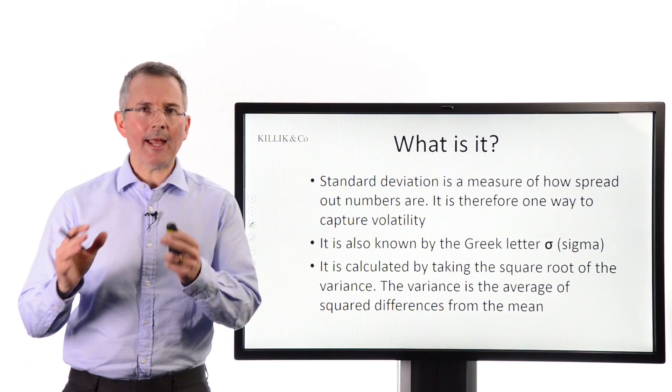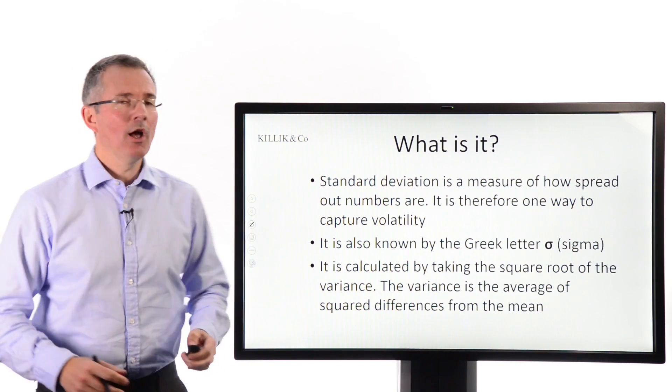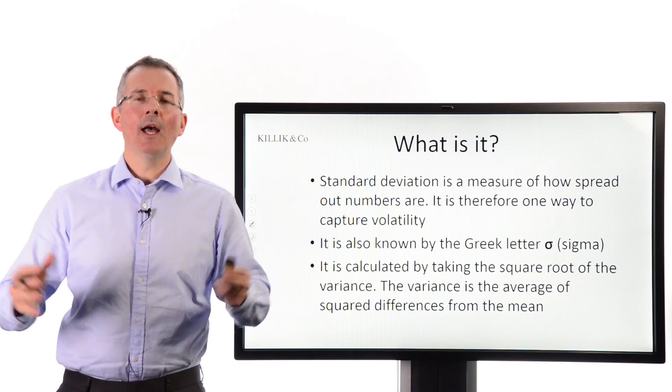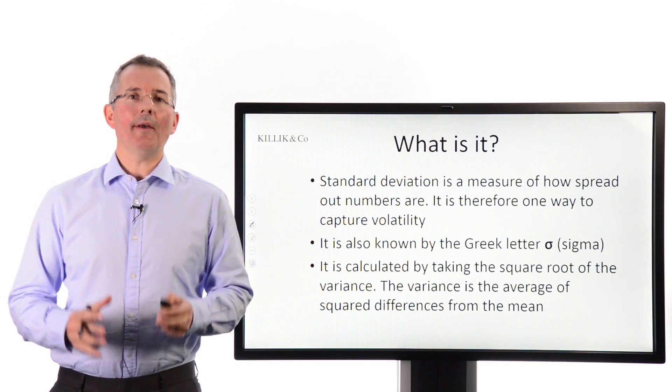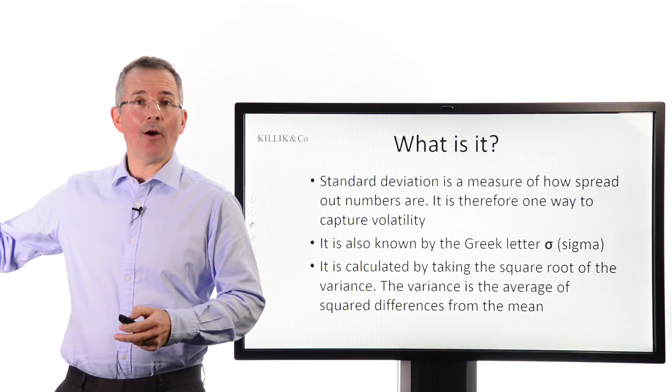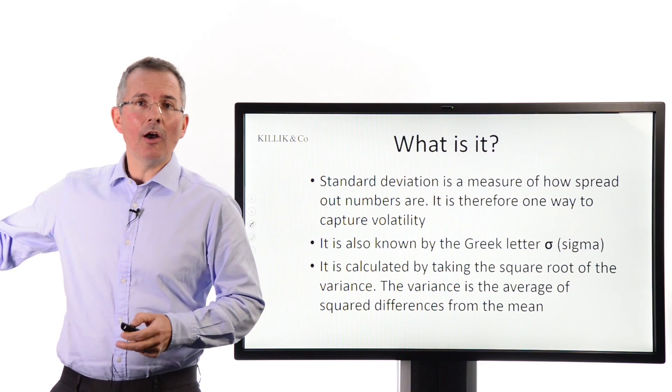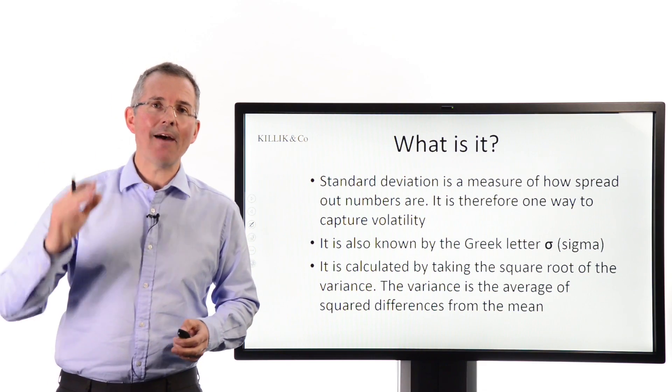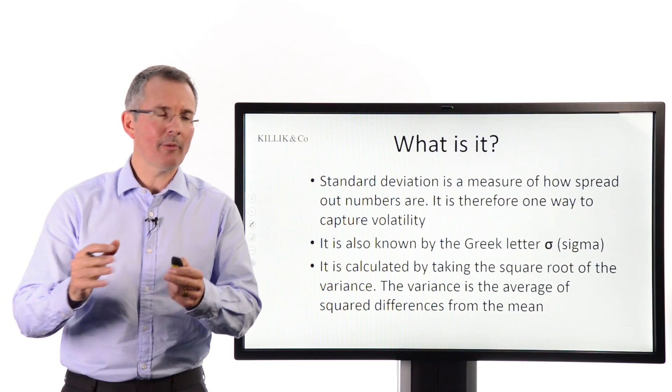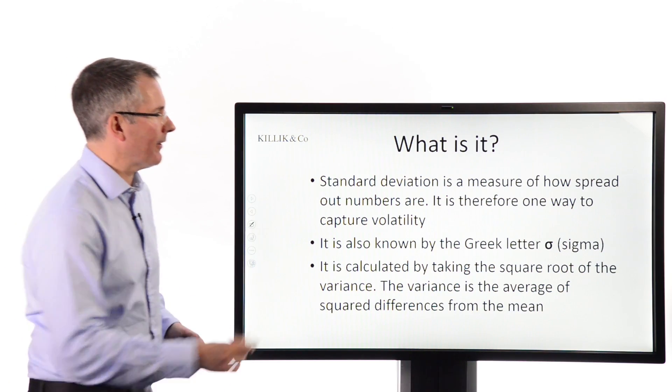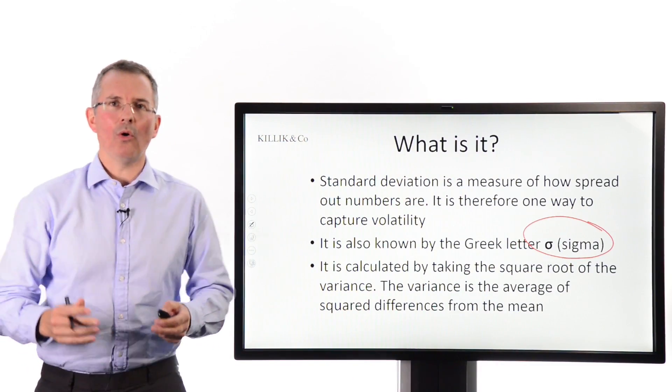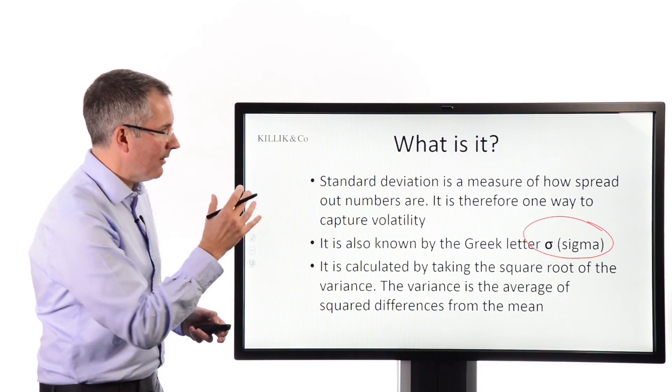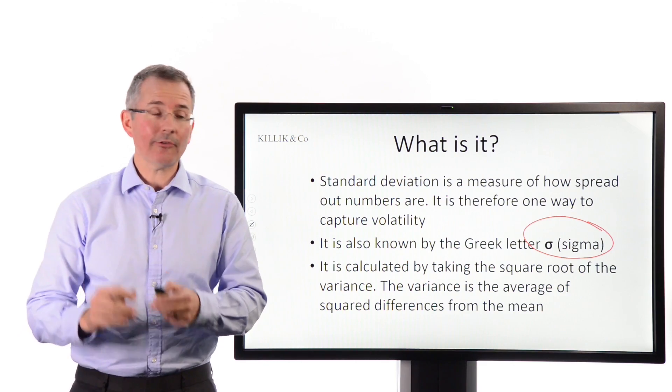Now then, what is standard deviation? It's essentially a measure of, some people call it dispersion, how spread out numbers are. How spread out from what? Well in this case we're looking at how far away numbers are typically from their average value. More about that in just a moment. It's also known by the Greek letter sigma. If you ever see that on a report or mentioned in the press or anywhere else, that's still referring to the same idea, standard deviation.